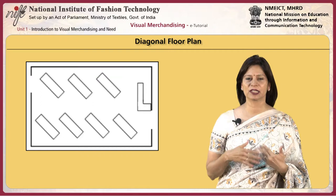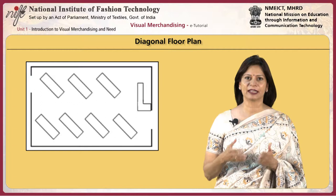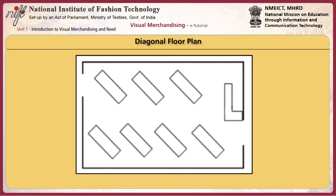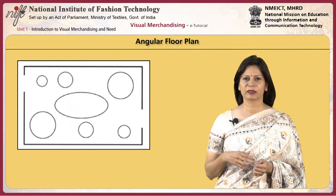The next is the diagonal flow plan. As the name indicates, the counters and fixtures are placed along a diagonal, mostly at a 45-degree angle for better visibility.